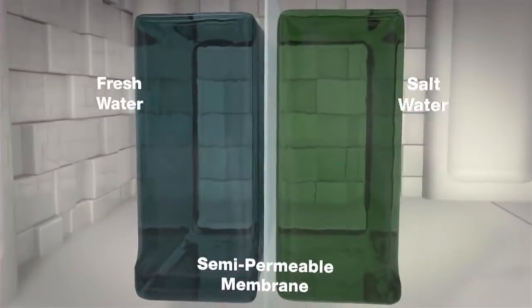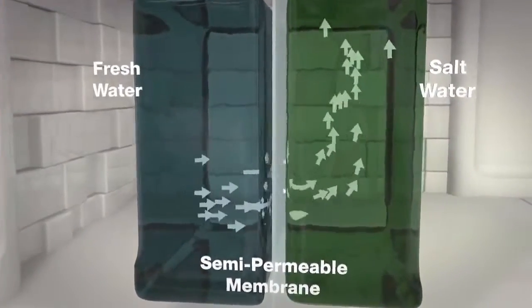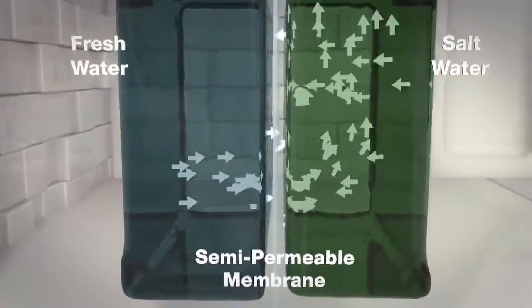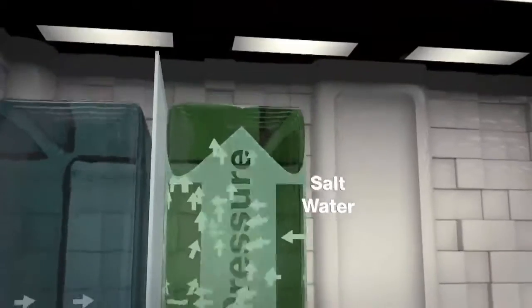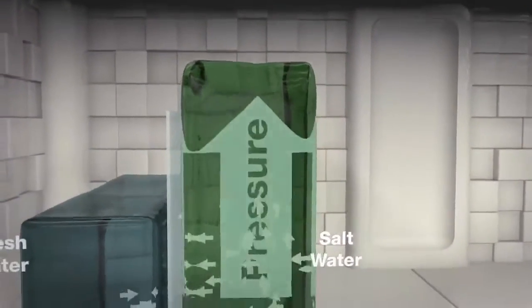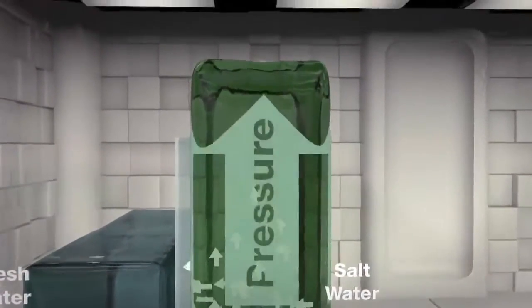This membrane allows fresh water to pass while remaining impermeable to salts, so the fresh water is drawn through the membrane into the salt water side, equalizing the difference in salinity and raising the pressure in the salt water tank.